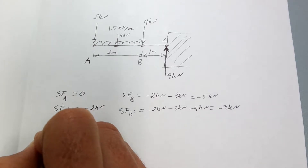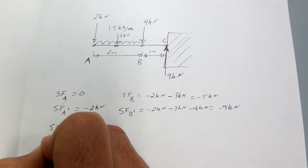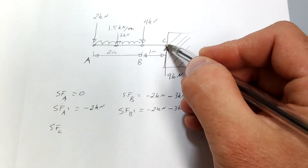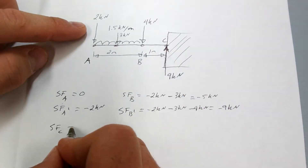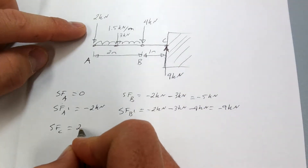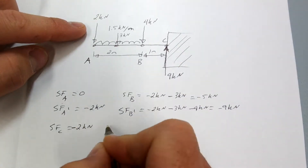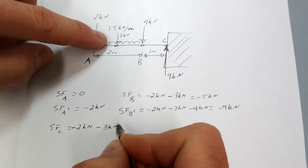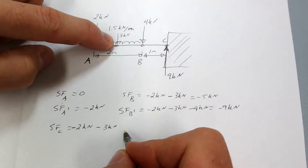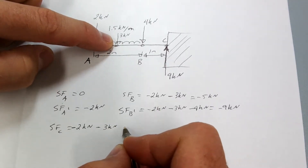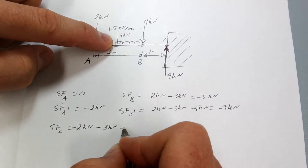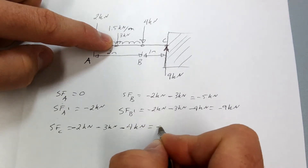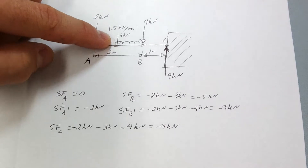Now let's look at the shear force at point C. Just to the left of that point, you have 2 kilonewtons in the negative direction, another negative 3 kilonewtons from the uniformly distributed load, plus another negative 4 kilonewtons — giving negative 9 kilonewtons in total.